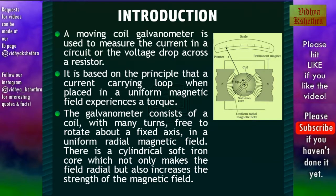Now this figure shows the setup of a moving coil galvanometer. The galvanometer consists of a coil with many turns free to rotate about a fixed axis in a uniform radial magnetic field.